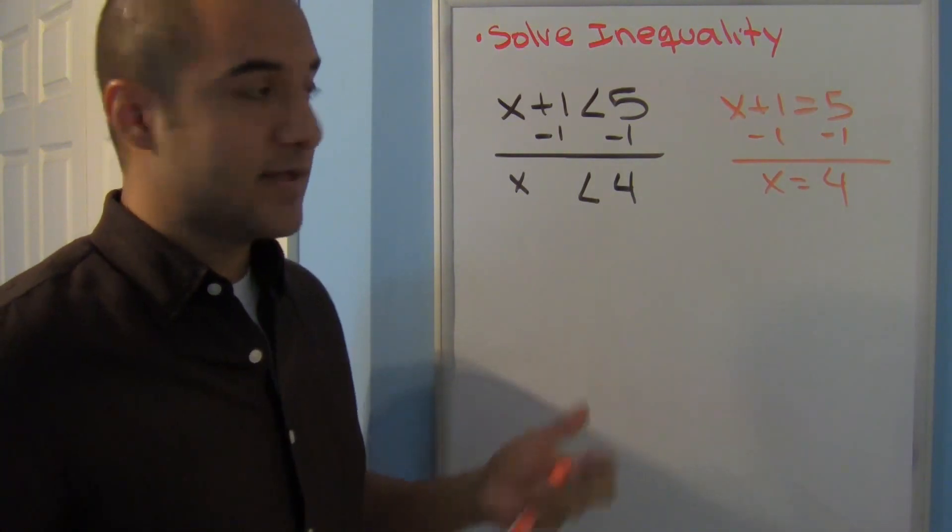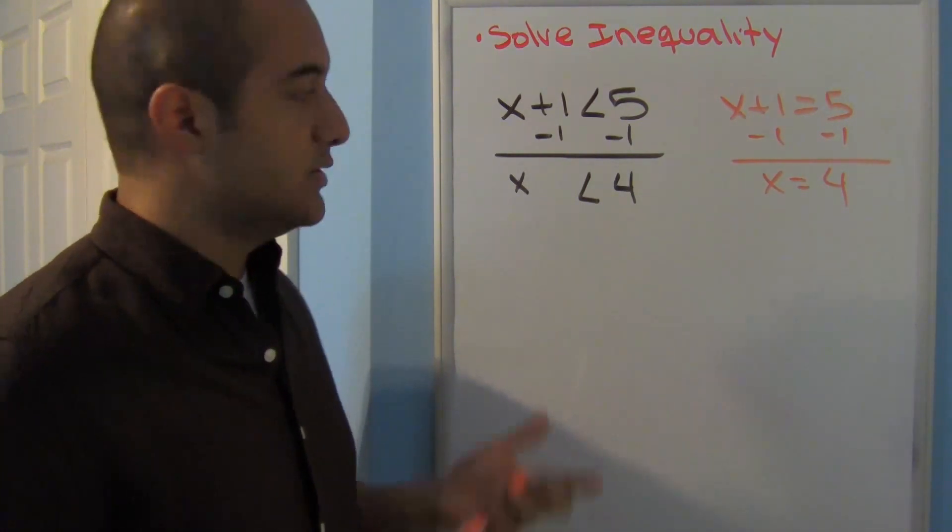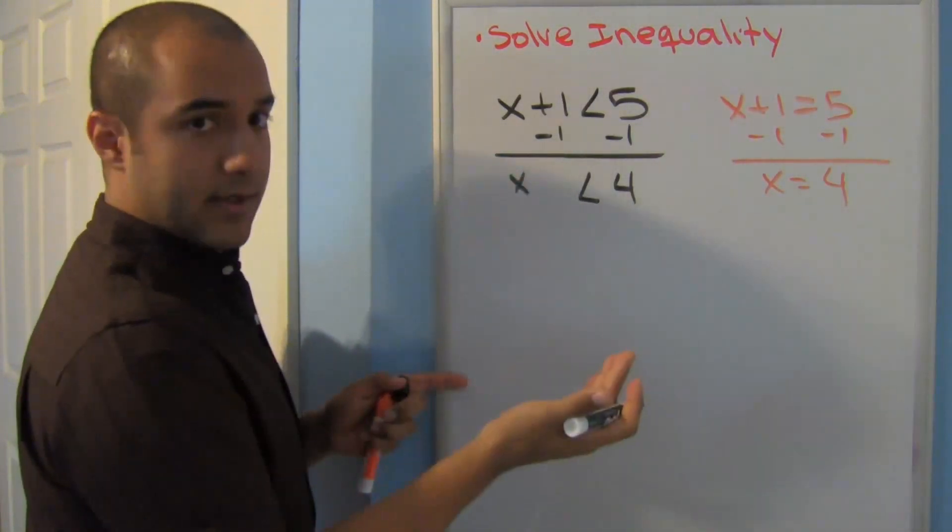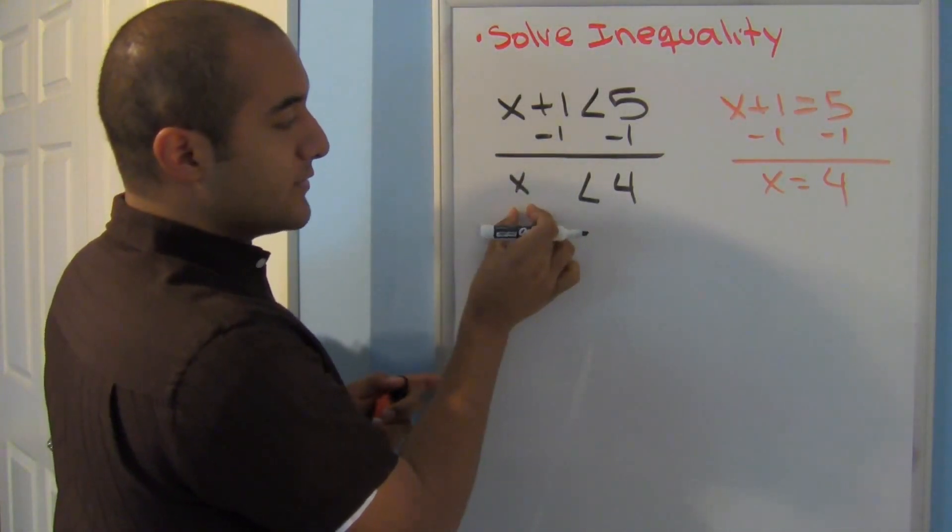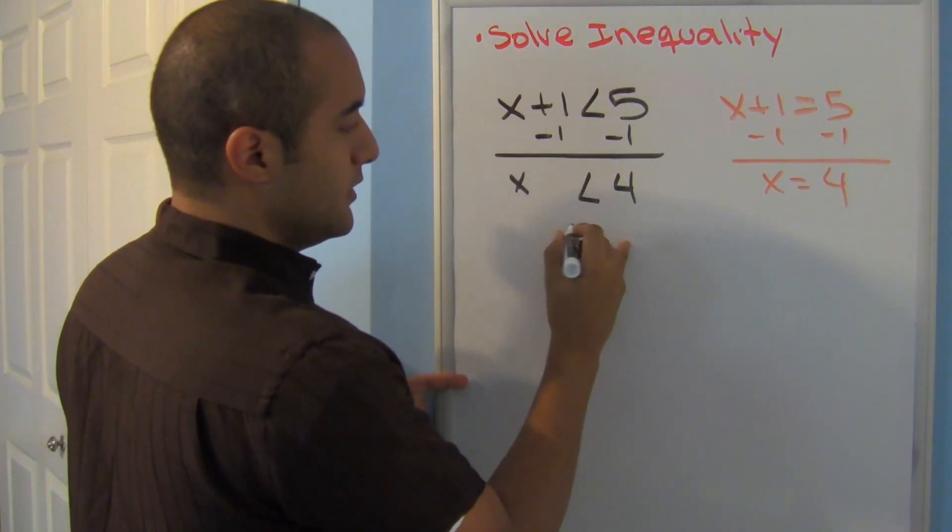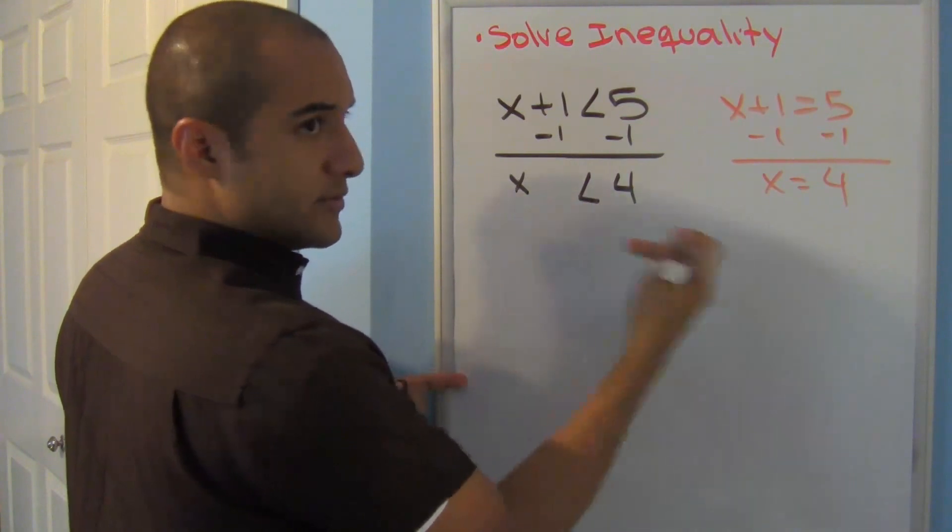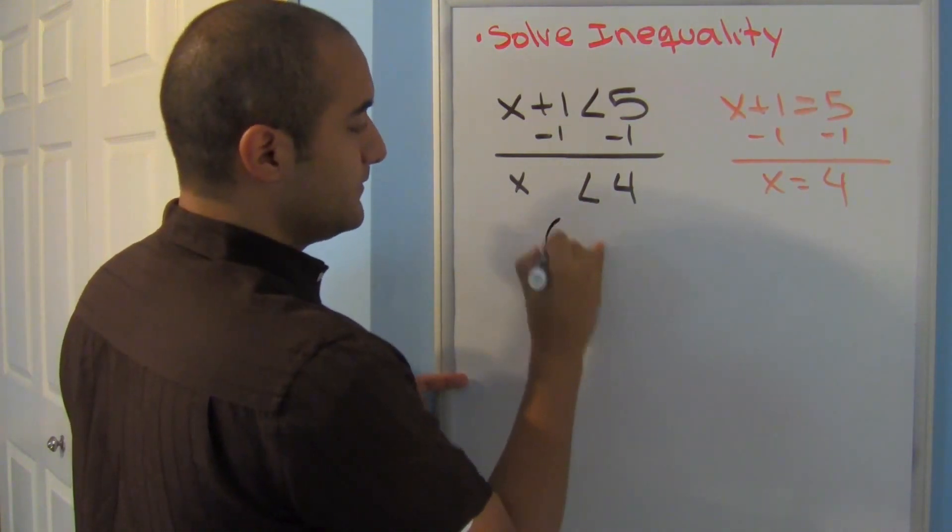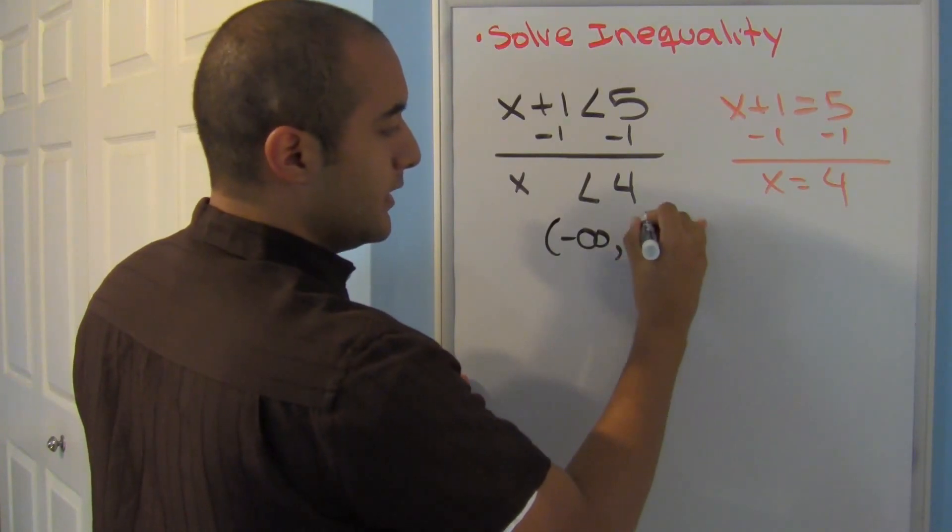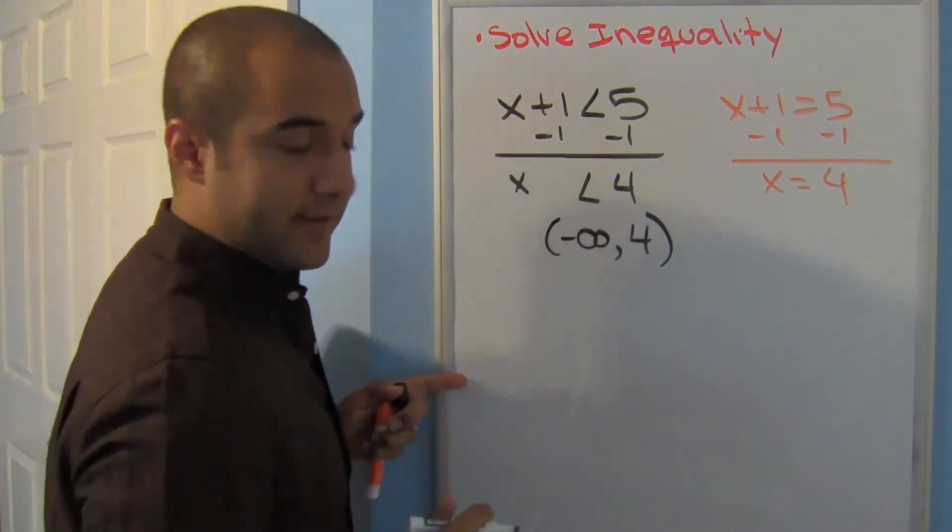Now, if your professor is asking you to write this as interval notation, you just go ahead and switch it off. Here you have, think about it as a sentence: your answers are less than 4, so that means that all your answers are going to be infinitely small. And this is a parentheses because it doesn't have an equal to.